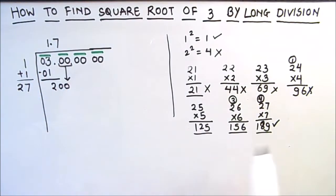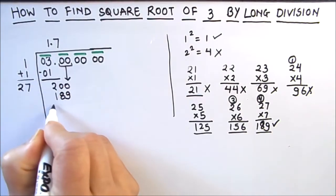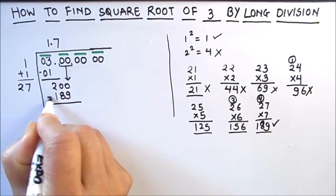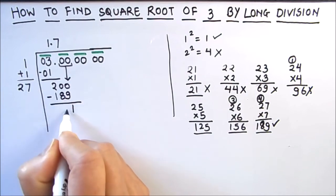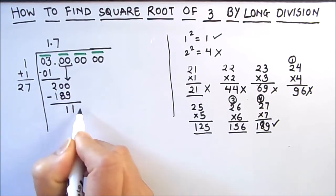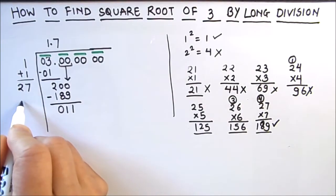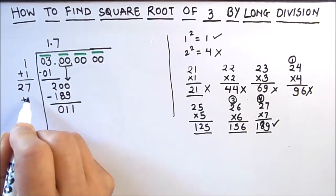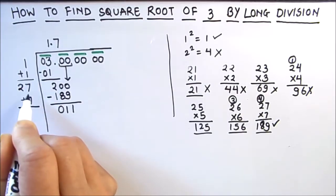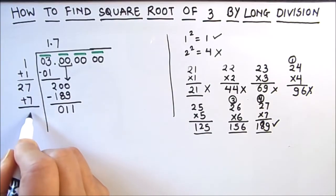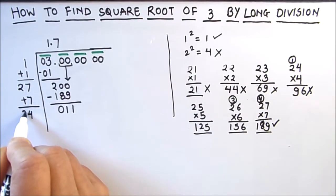Now we subtract: 200 minus 189. So 10 minus 1 is 9, 9 minus 8 is 1, giving remainder 11. Our new divisor base is 2 times 7 which is 14, or we can add 7 to 27: 7 plus 7 is 14, carry 1, giving us 34.